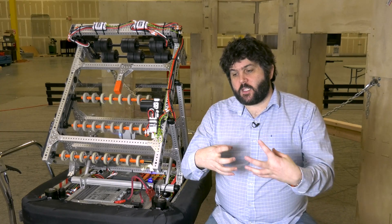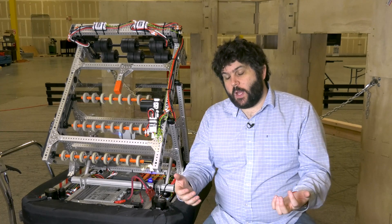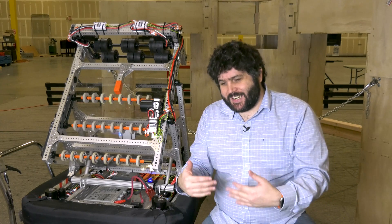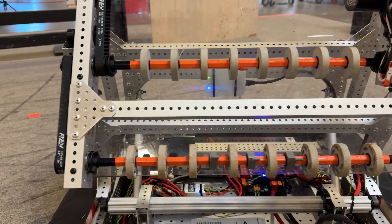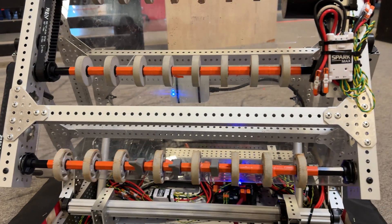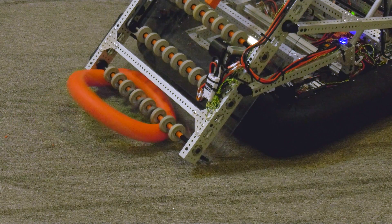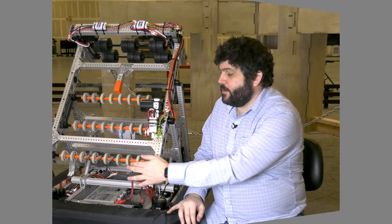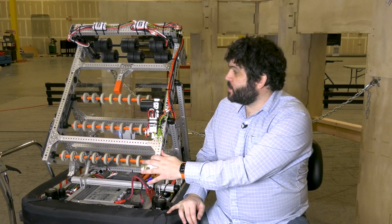When we tried this the first time, we just used compliant wheels. And while the intake worked well, it took a little bit to get into the intake. But when we added the flap wheels, they really helped bring the game piece in. So it's just that first little engagement to flap them kind of pull in. And that made a really large difference in the effectiveness of the intake as a whole.